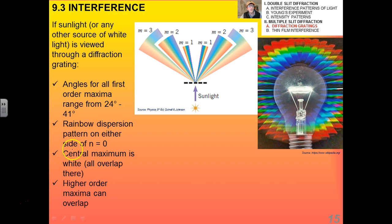Essentially, what we'll end up with is a dispersion pattern of light, not unlike what we see from a prism. If sunlight, or any other source of white light, or any light that has more than two wavelengths in it, is viewed through a diffraction grating, what you'll see is the angles for all the first order maxima range from 24, which was for violet, to 41, which was for red. You'll have a rainbow dispersion pattern on either side of n equals zero. The central maximum, however, is white, because it's where all of them overlap there.